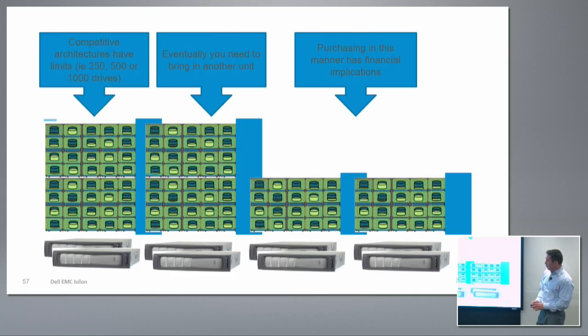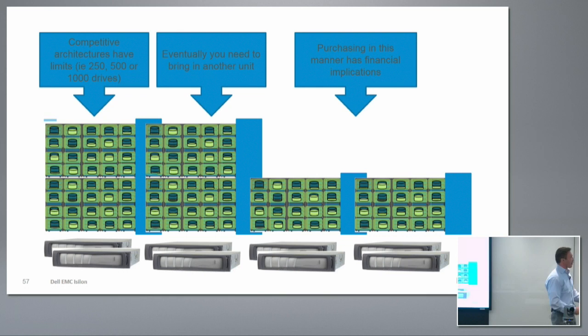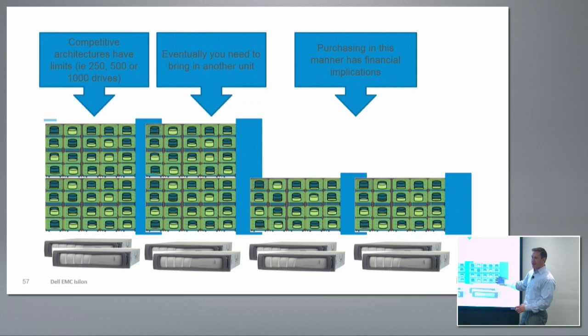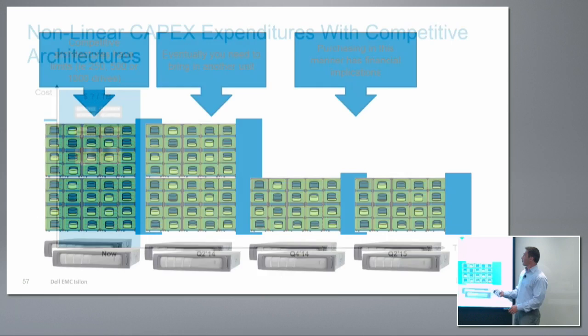Competing technologies basically have all these different filers, and you might be using varying levels of capacity in each — some might be full, some somewhat empty, some consuming a lot of performance — but they're all captive to that particular filer. This filer can't access capacity on that filer. Volumes don't span filers or controllers.